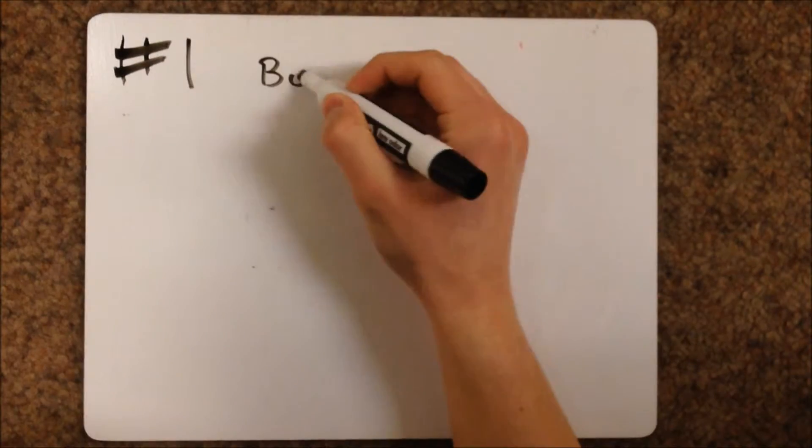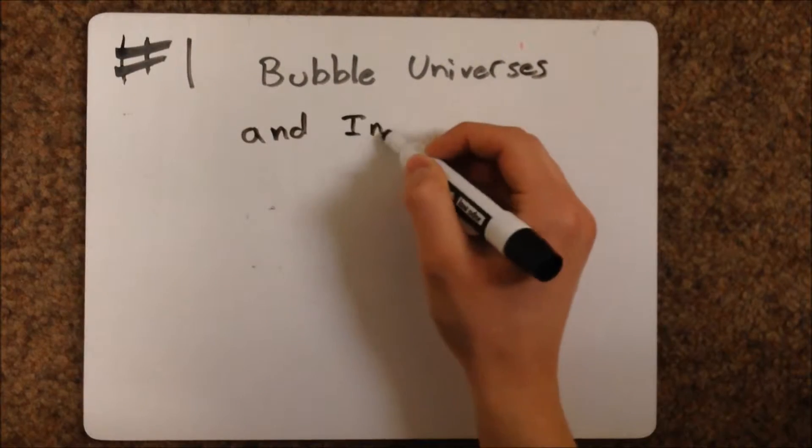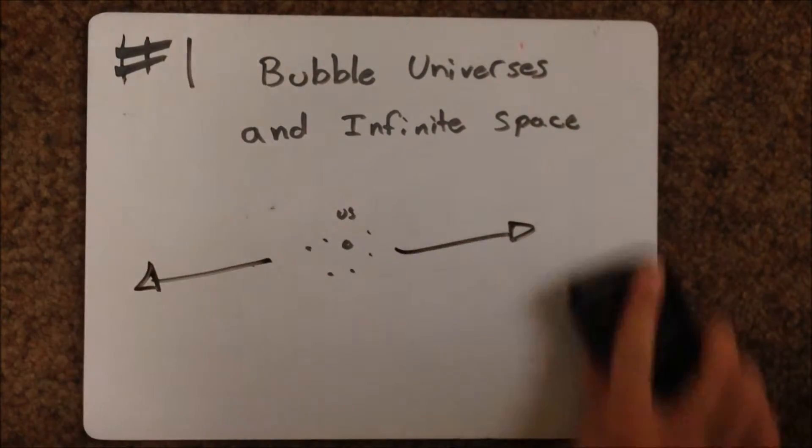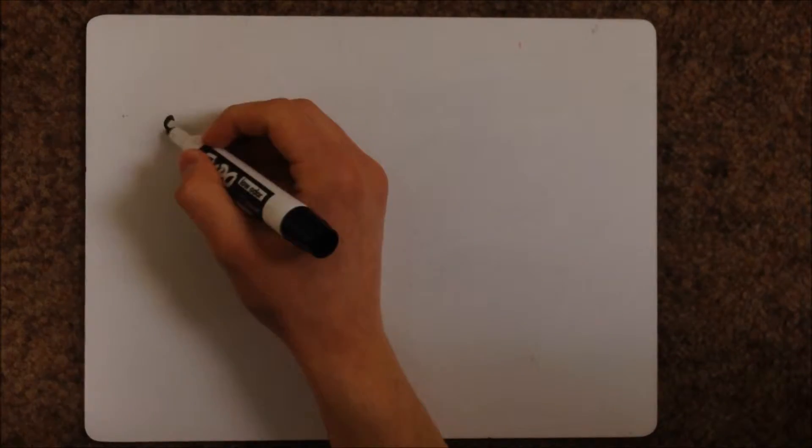The first possibility is known as the bubble universe, which suggests that if space is infinite, then there must exist an infinite number of other universes which are completely foreign to our own.